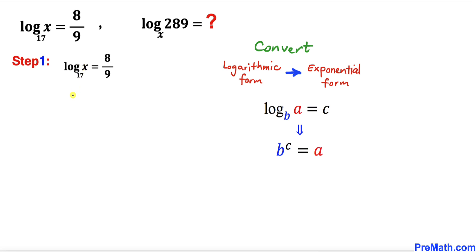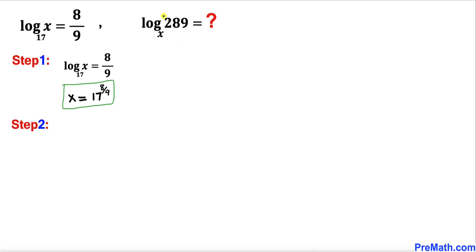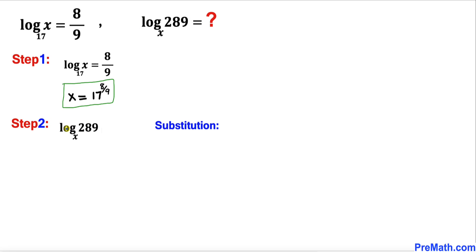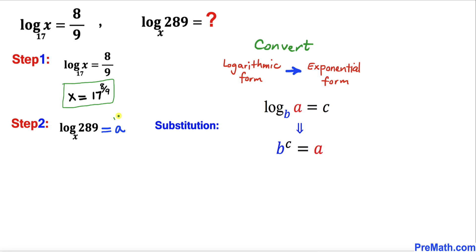Converting to exponential form, we can write x equals 17 to the power of 8 over 9. Now let's focus on the expression log of 289 with base x. Let me set this equal to a. Converting this logarithmic form into exponential form, we get x to the power a equals 289. Since x equals 17 to the power 8 over 9, I'll substitute that in.